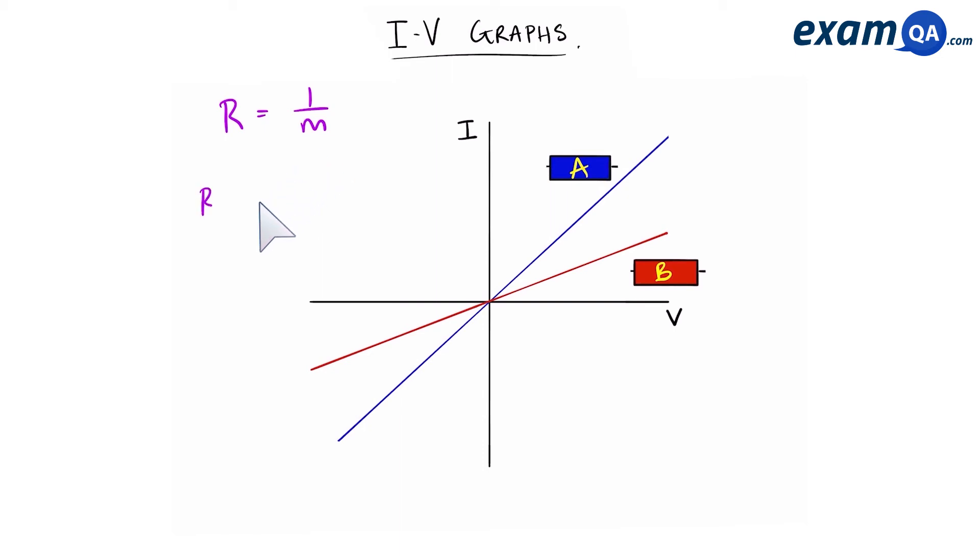So when resistance is high, the gradient is low and vice versa. So if we look at A, A has a much more steeper gradient than B. Therefore it must have a lower resistance. So A has got lower resistance, B is much more flatter and therefore it has higher resistance.